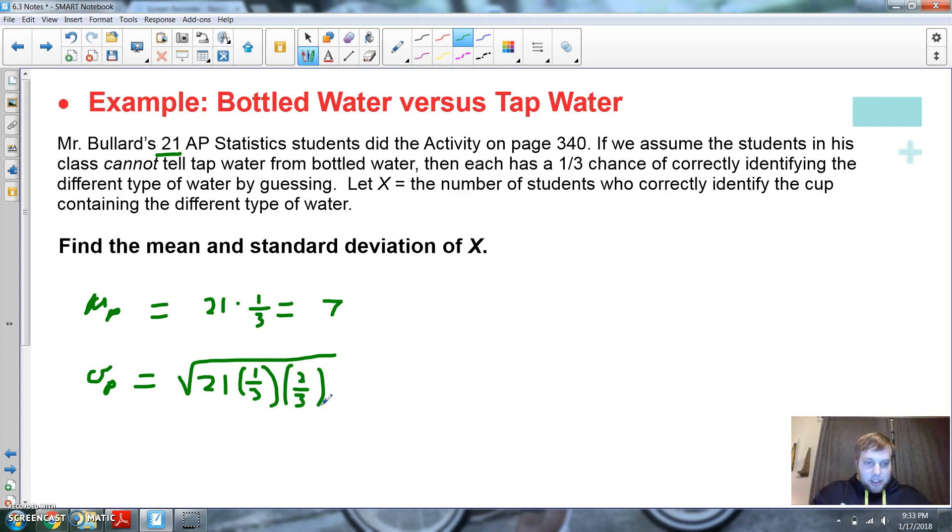I'm going to multiply that together. I'm going to go square root of 21 times one third times two thirds and I get a standard deviation about 2.16. It's going to be a little bit more spread out than our O blood. Old blood only had a deviation of one. This one's going to be spread out over much more time. Well, there's 21 students too. There you go. Mean standard deviation. Let's do one more.